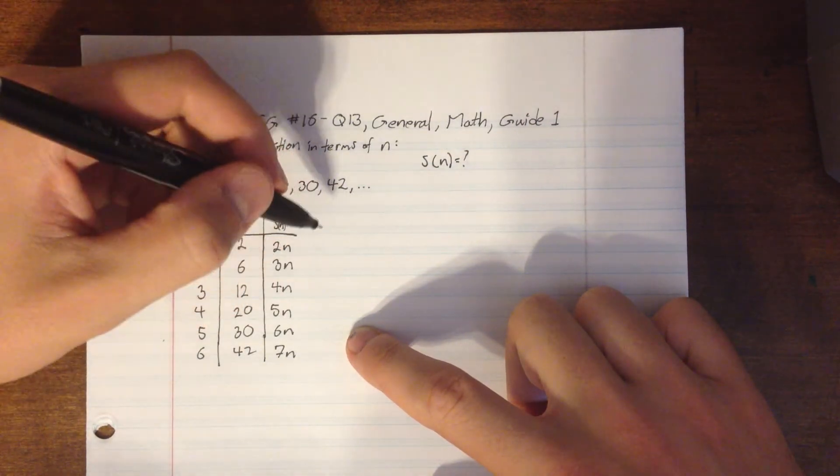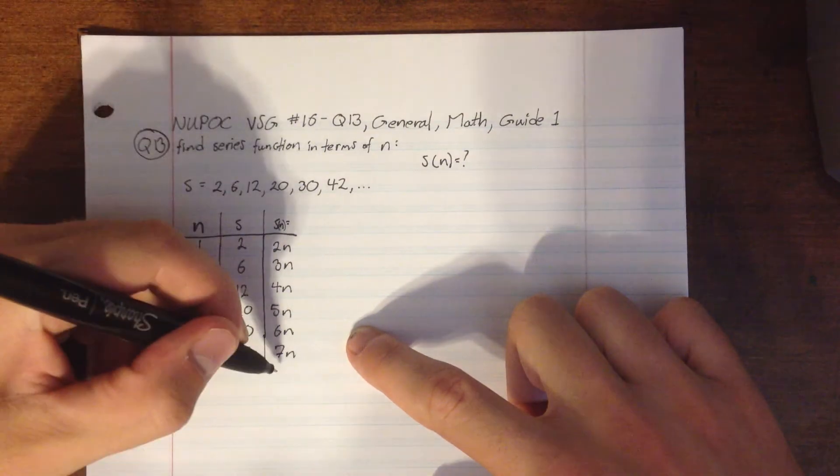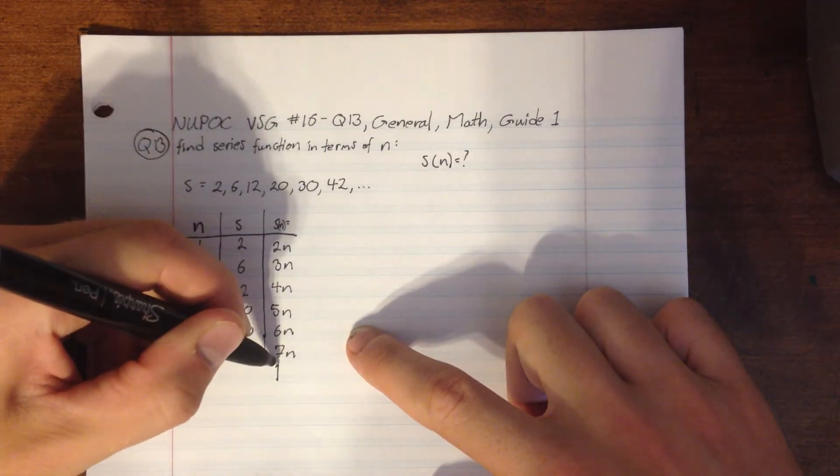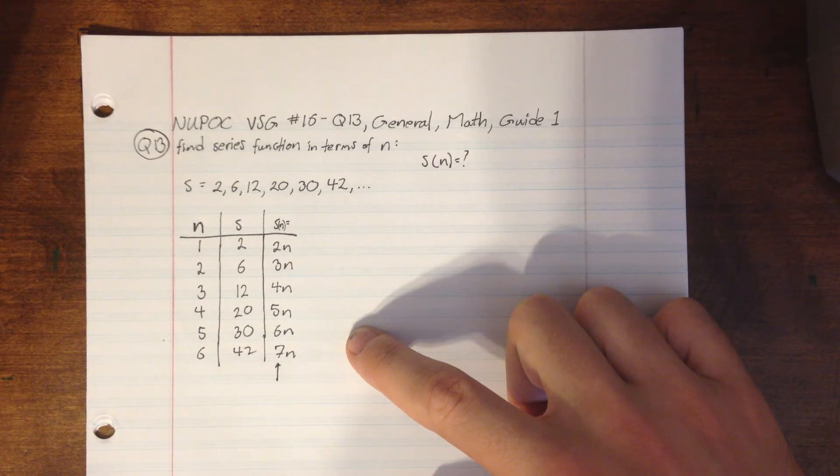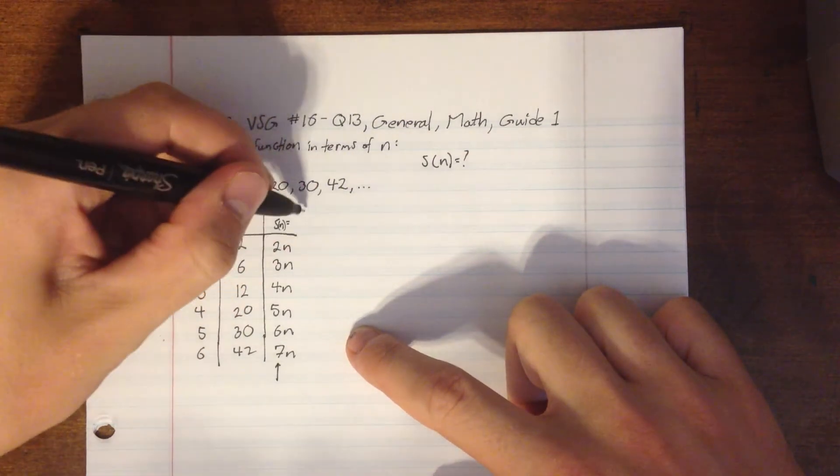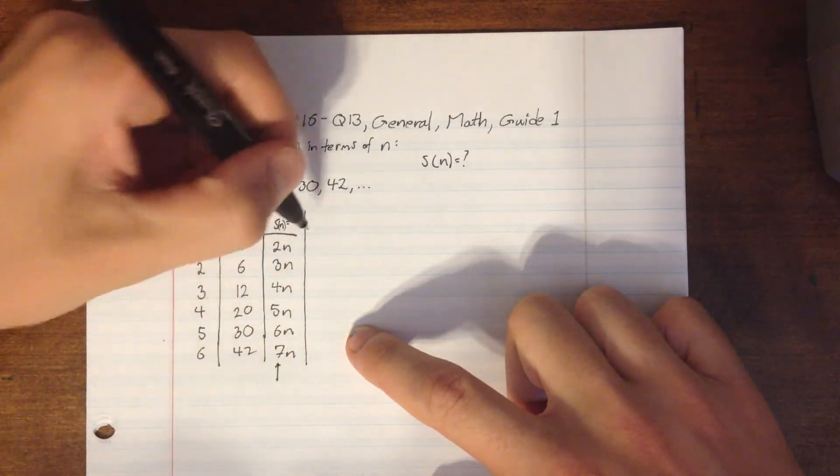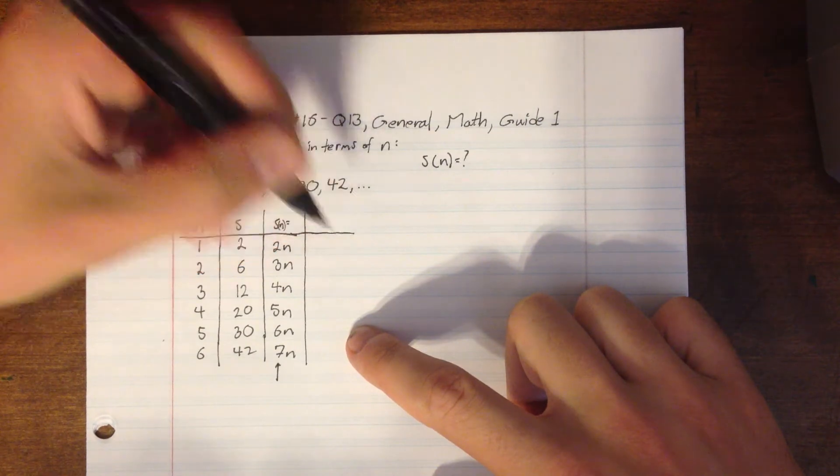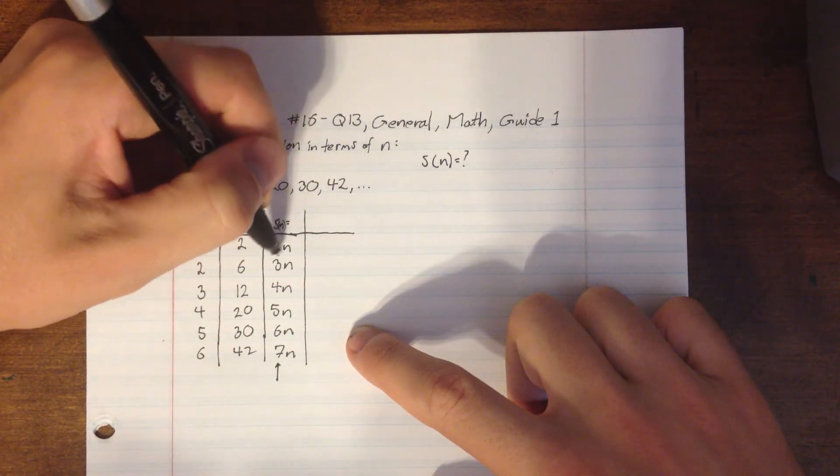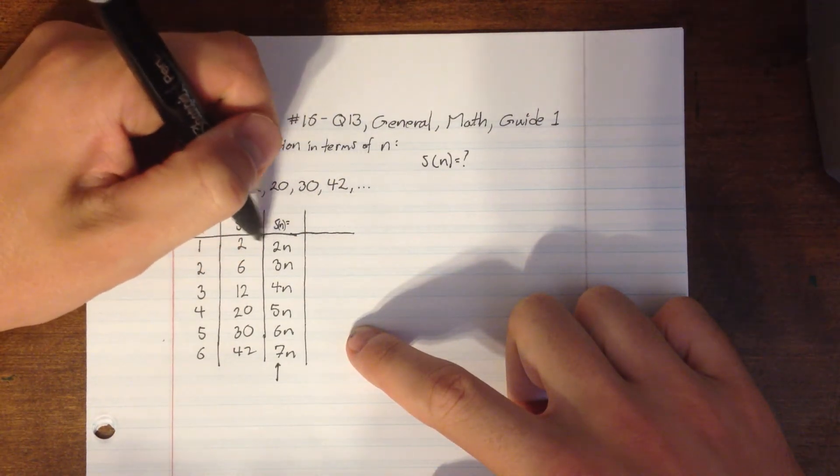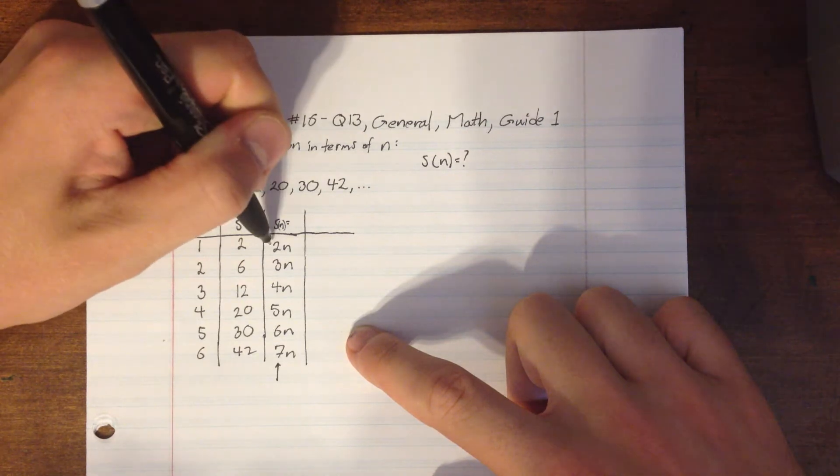So now the second part is we kind of want to look at these coefficients and say, well, how are these related to n? So I'll just draw another column here. And so you can see that 2, how is 2 now related to n? Well, 2, that's 2 times n, right?